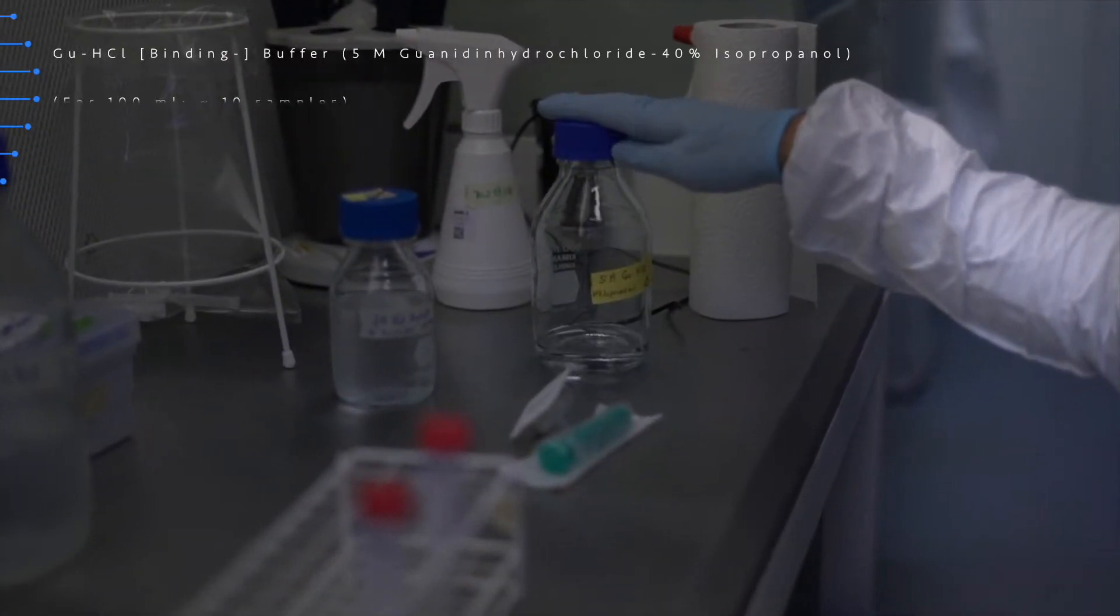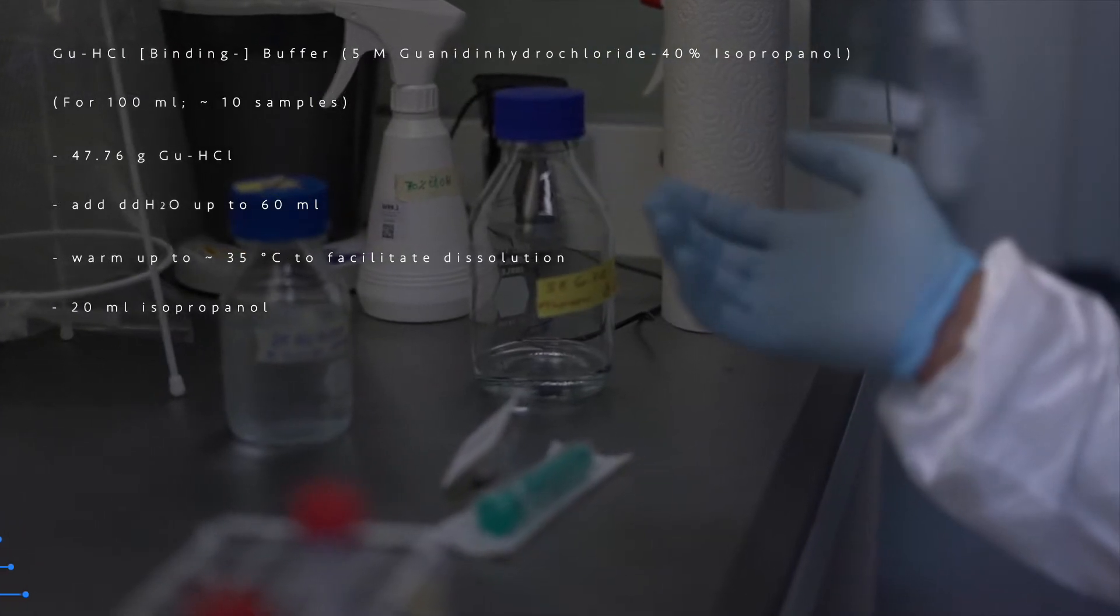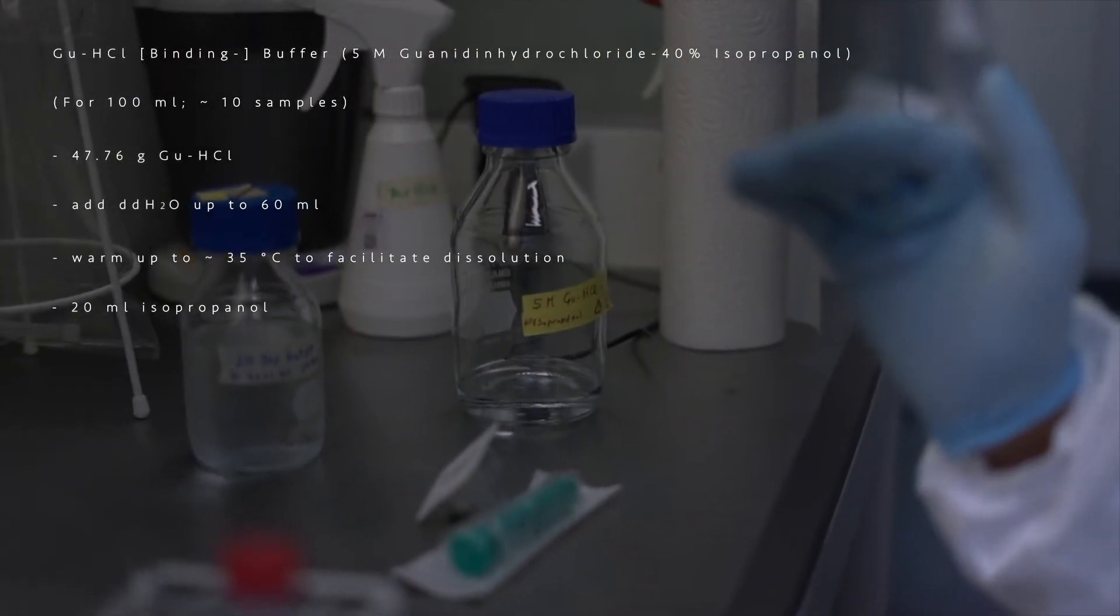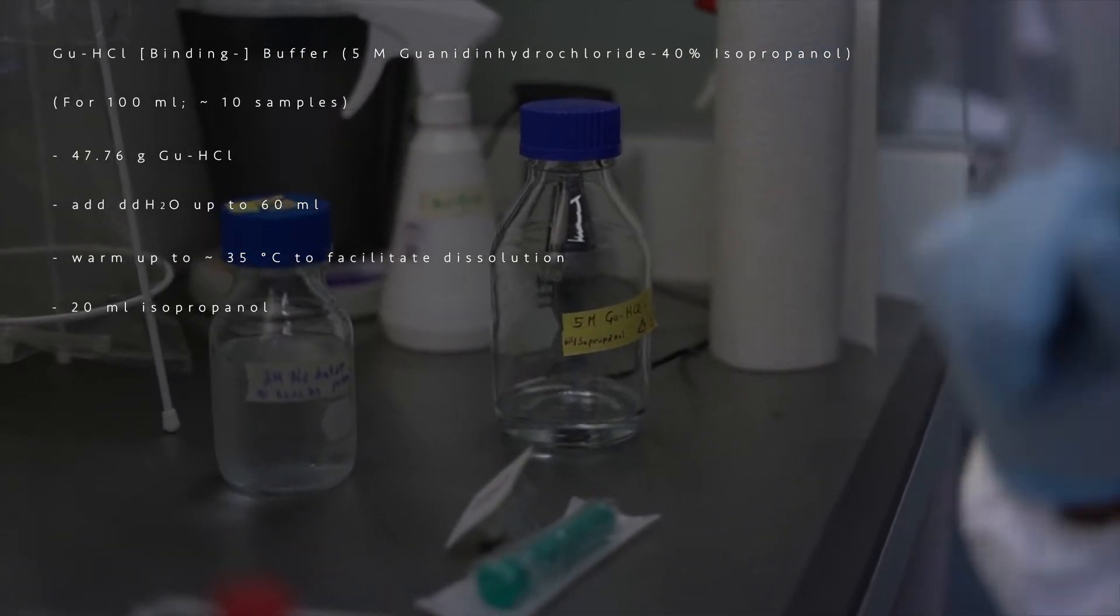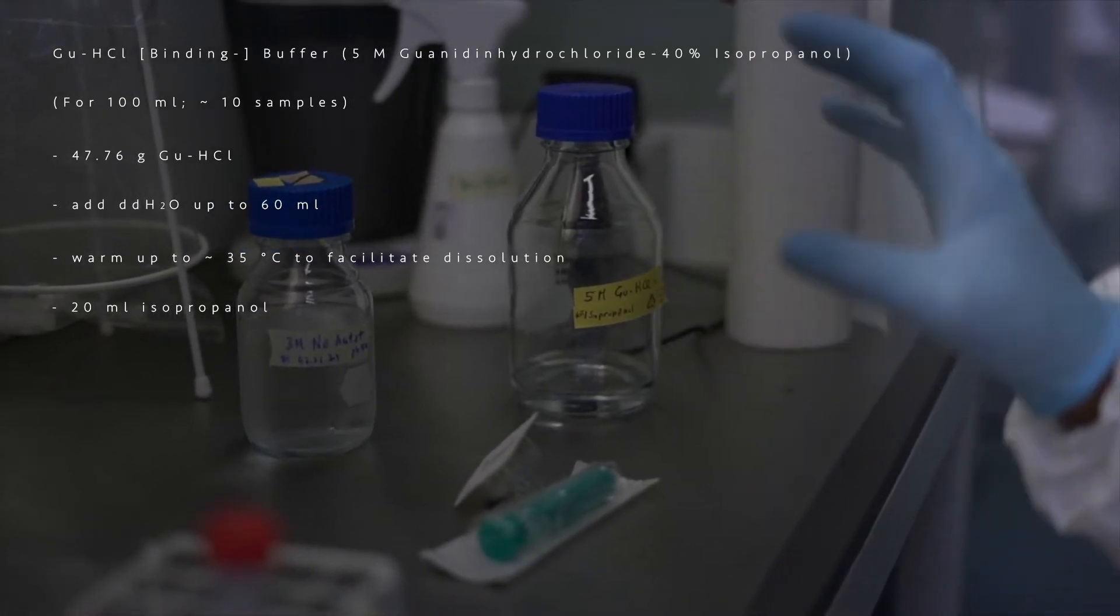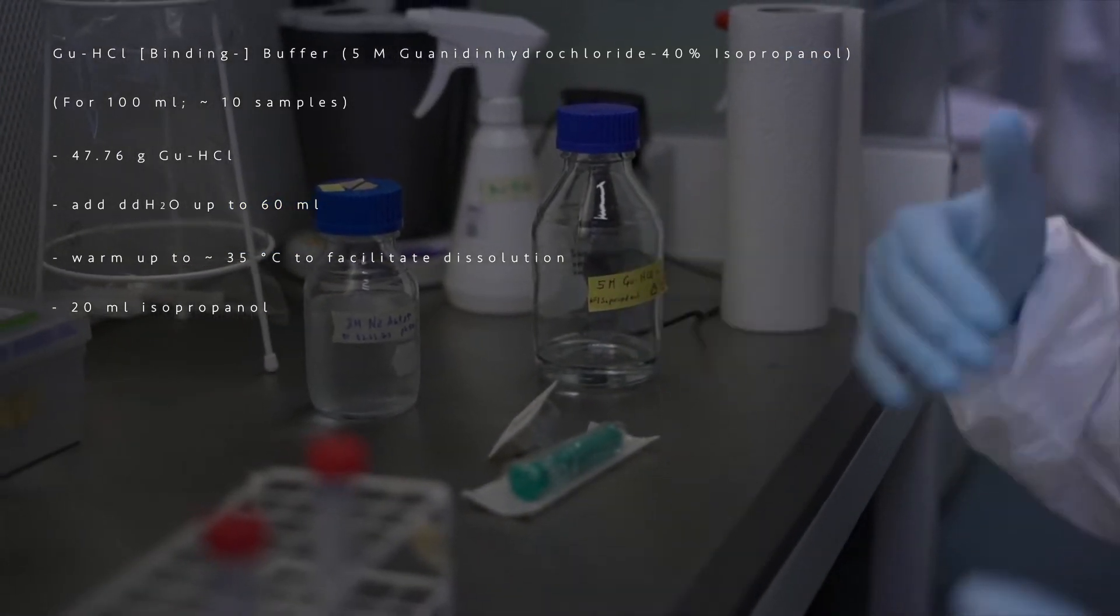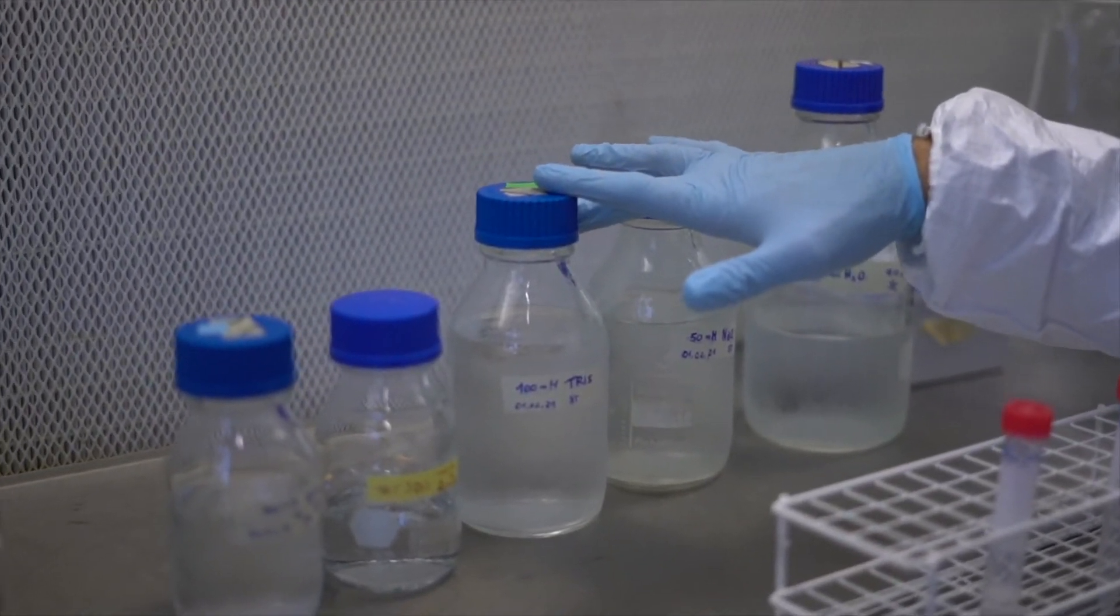The guanidine hydrochloride buffer 40% isopropanol is basically the binding buffer. It's not much different from those binding buffers that we find in commercial kits for DNA isolation. Those silica column based DNA isolation kits, we need to prepare on our own because we need big amounts. Today this evening we are going to prepare the PTB-DTT buffer.